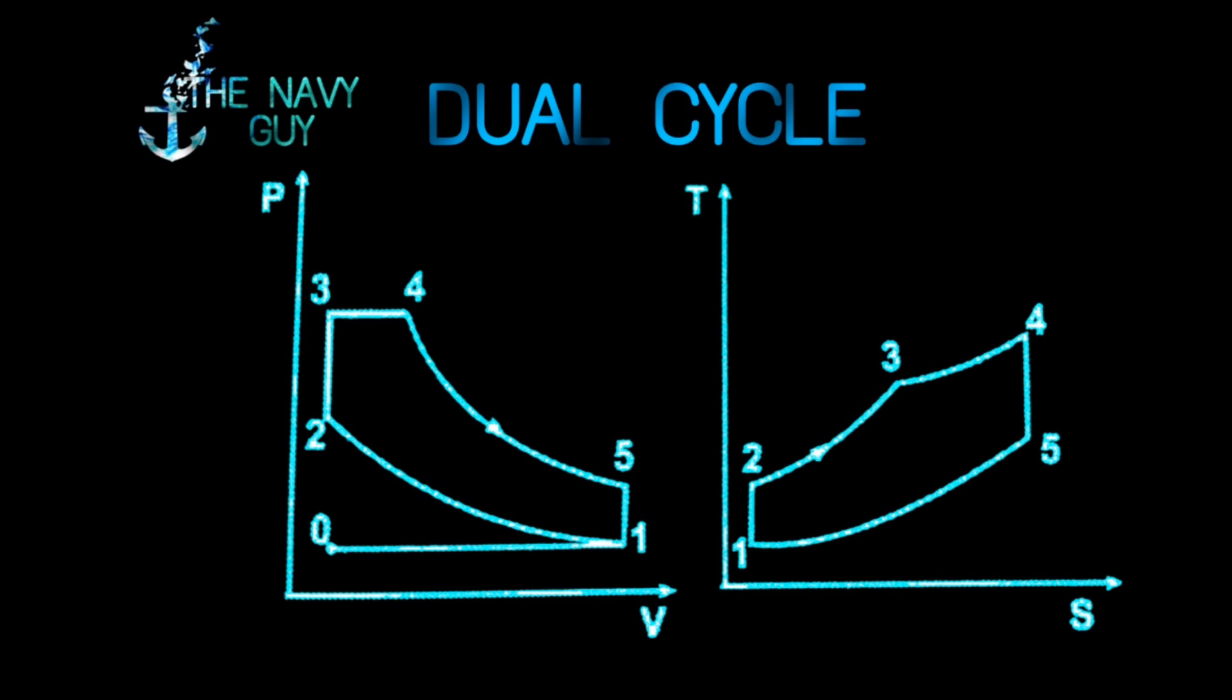Now let's talk about dual cycle. It is called dual cycle because it is a combination of both Otto cycle and diesel cycle. Let's talk about the processes involved. From 0 to 1, charging of fresh air takes place till point 1. From 1 to 2, air is compressed isentropically. From 2 to 3, heat is added at constant volume.